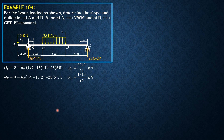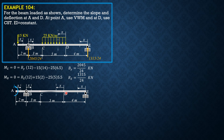Next, for the unit virtual work on the beam, let's solve for the slope at A first. This is the positive direction. For the virtual work method, the couple is 1. The reaction here is upward: summation of moments at A equals 1, so the reaction is 1 over 12. Summation of forces in Y equals zero, so the other reaction is 1 over 12 downward.